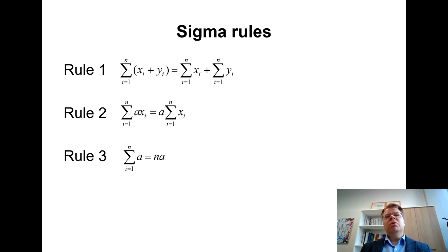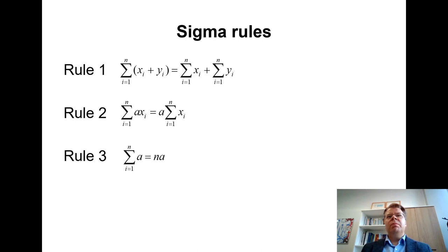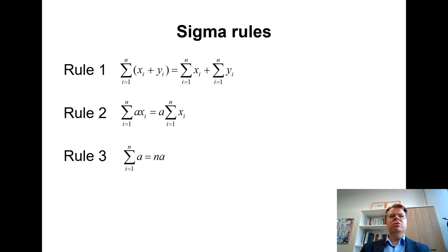It becomes more difficult when you have a more lengthy proof and I utilize these properties as part of the proof — then it might not appear so obvious anymore. So please pay attention to the sigma rules at this point so that we will find them easier to understand later on. There are also other rules we will apply, so it's good to be aware of these properties of the sigma operator.